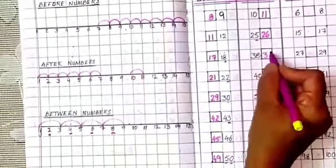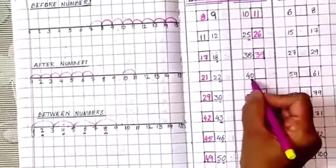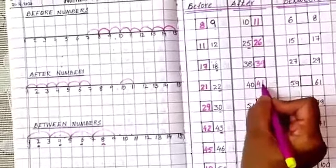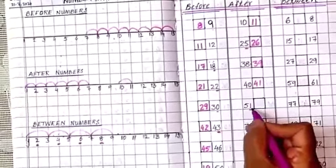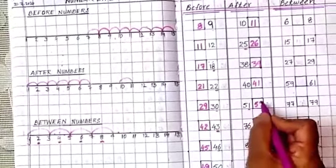38, 39. 40, yes, 41. 51. Check here 1's place. 50. After 1, 2 comes. So write here, 52.